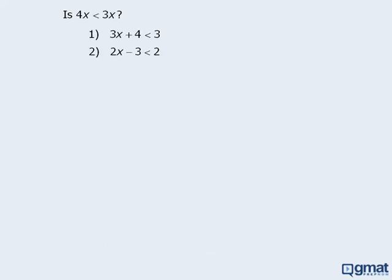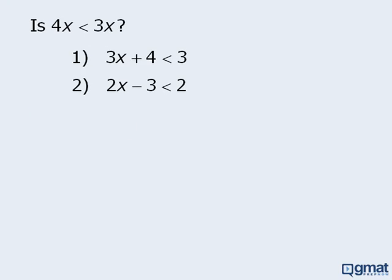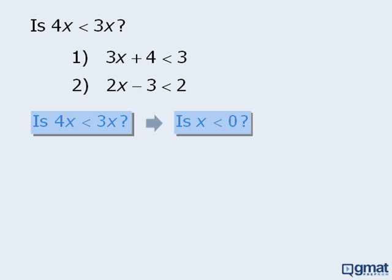Now let's examine a different question. The target question asks us to determine whether or not 4x is less than 3x. Is there another way to rephrase this? If we subtract 3x from both sides of the inequality, we can rewrite the target question as: is x less than 0? Or: is x negative? So there are three different ways to phrase the target question, and the last two versions make it a lot easier to answer — it's much easier to determine whether x is less than 0 than whether 4x is less than 3x.